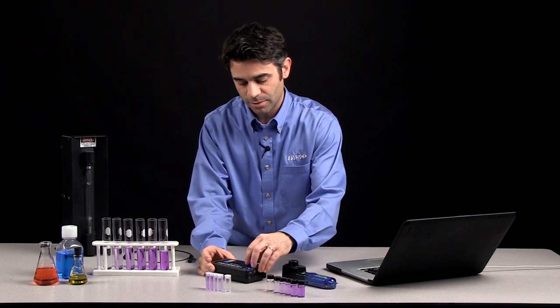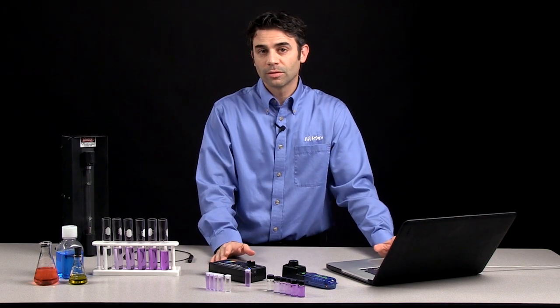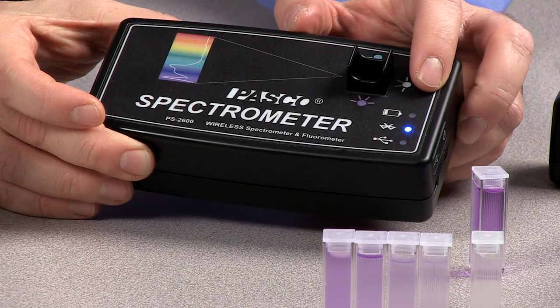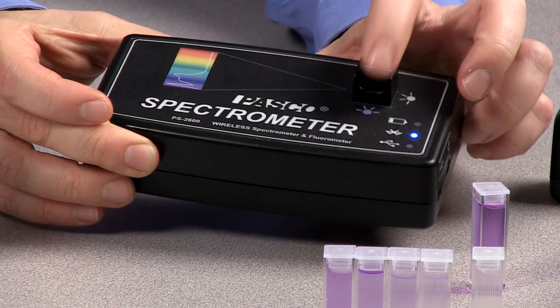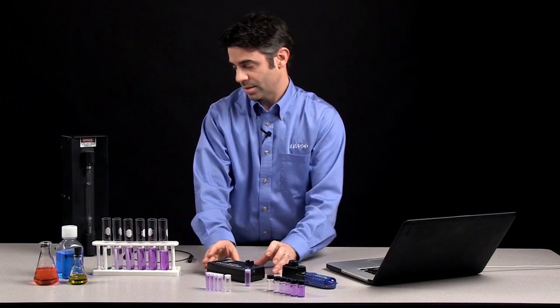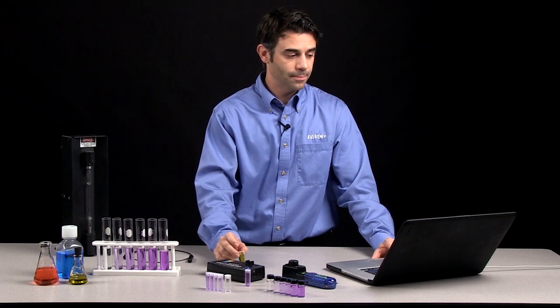The other nice thing about the spectrometer, in terms of just simply analyzing solutions, is the spectrometer has built-in fluorescence support. So not only is there the white light source, there's also a green and a purple excitation LED for fluorescence. So I can put in a sample that will fluoresce, like olive oil or fluorescein.